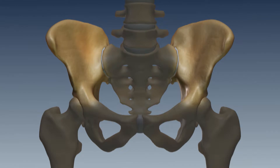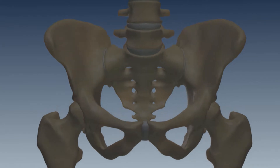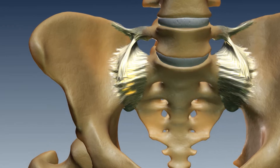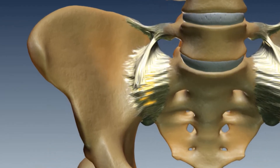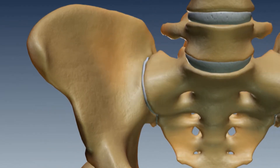That joint is a part of the pelvis and the spine. In fact, it connects the sacrum to the pelvic ring. The sacrum is one of the lower parts of the spine.